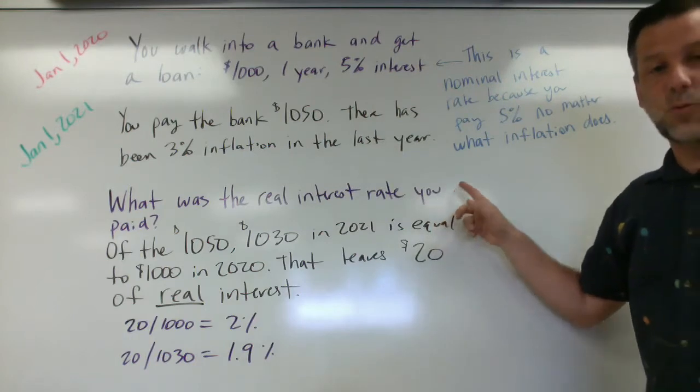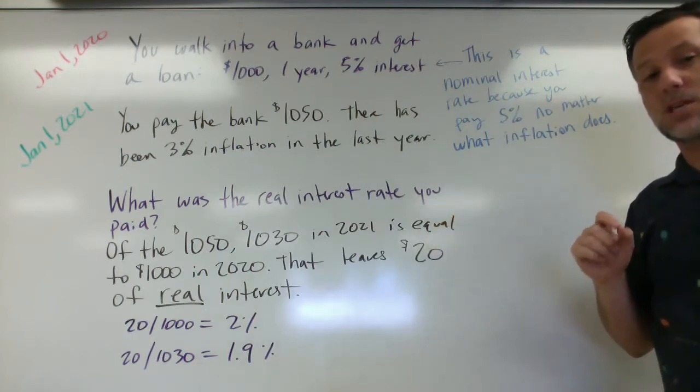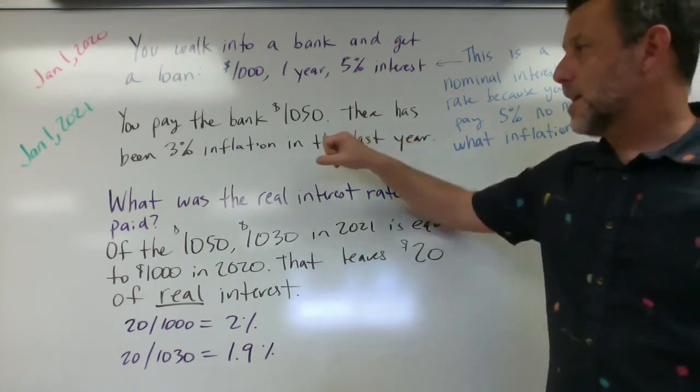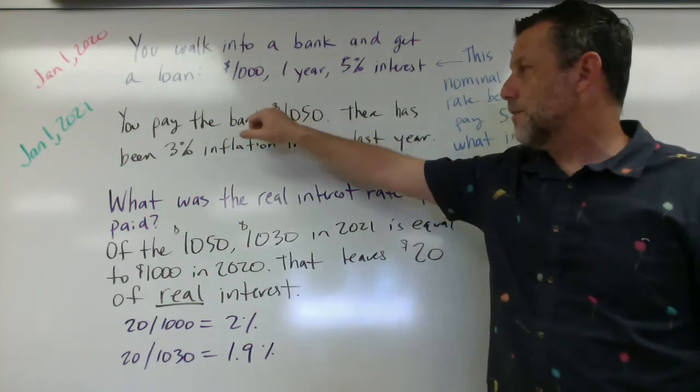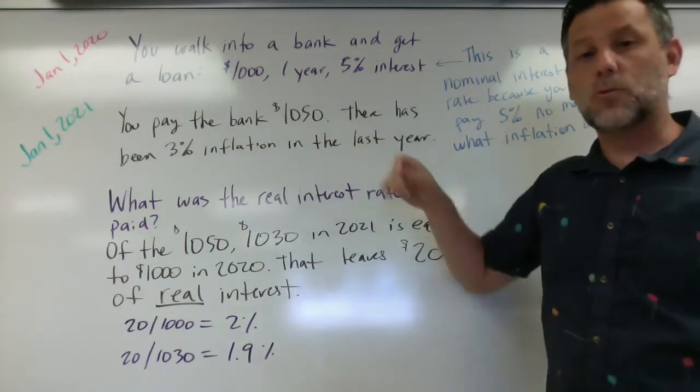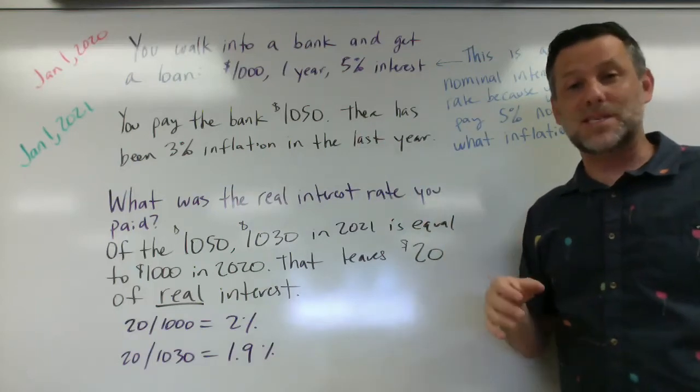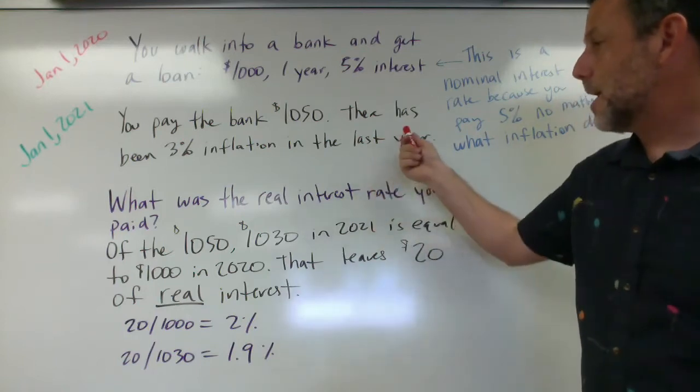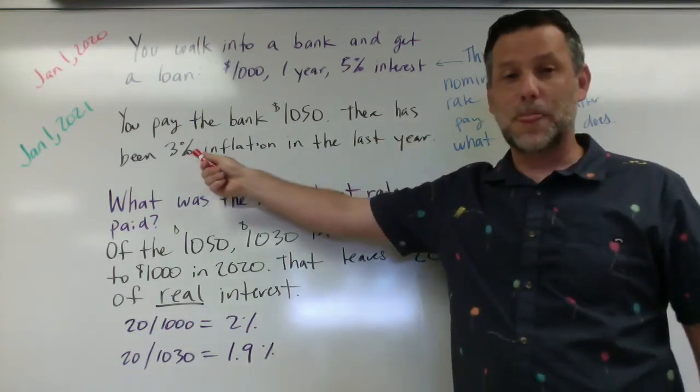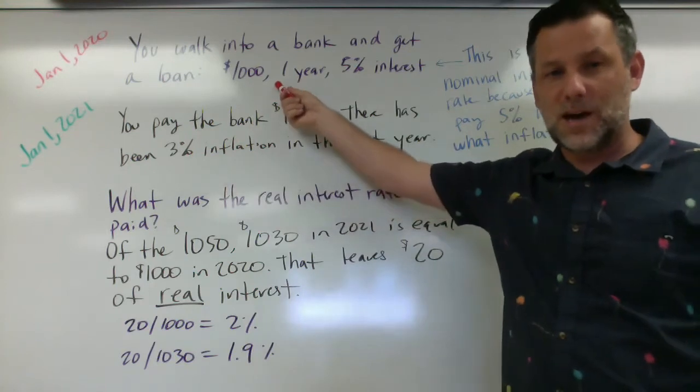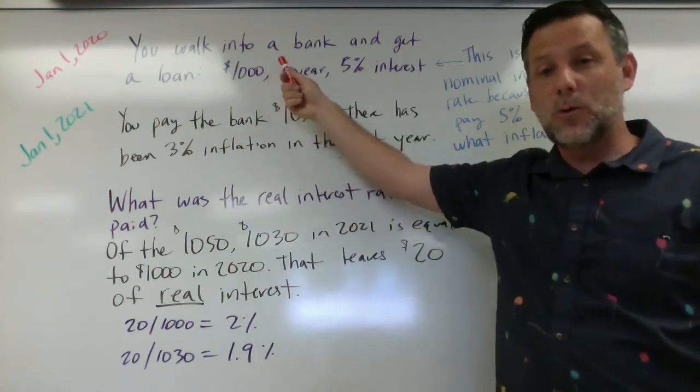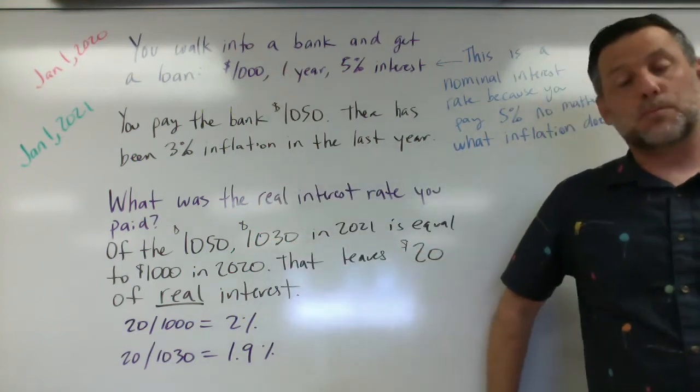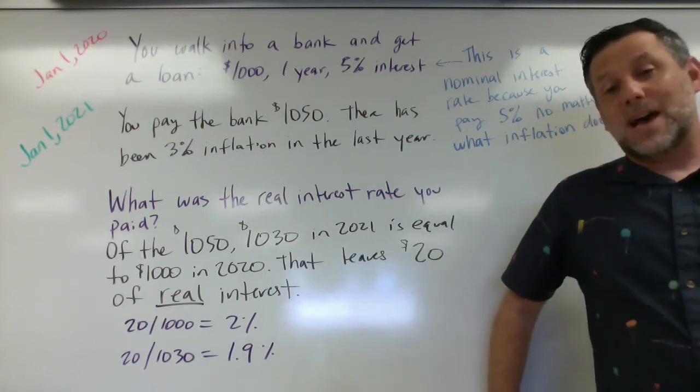The question I have is what is the real interest rate that you paid? How much interest did you really pay? So let's break this down. First thing is of this $1,050, how much was the original amount? You might be tempted to say $1,000 was the original amount that you borrowed. But what's happened over time is prices have gone up by 3%. So the equivalent of $1,000 in 2020 would be $1,030 in 2021. That's $1,000 plus 3% inflation would be $1,030.